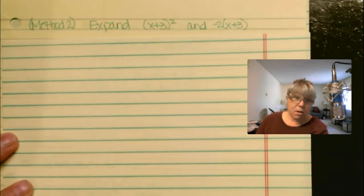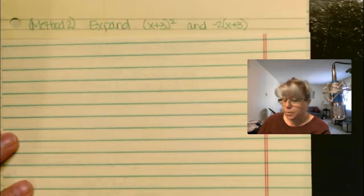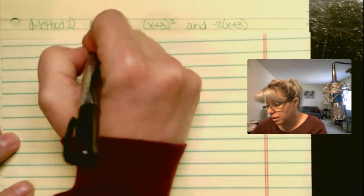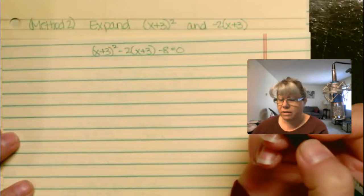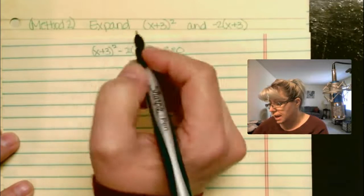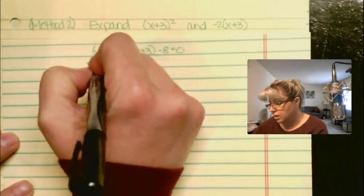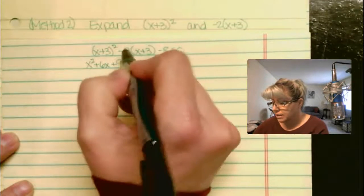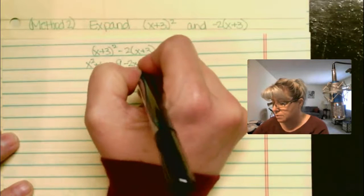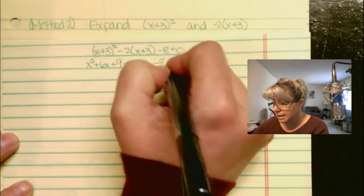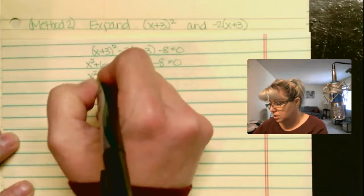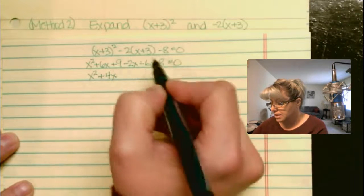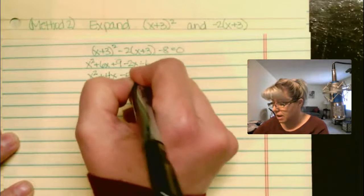That was one way of solving. The other is to go ahead and expand both x plus 3 squared and the negative 2 times x plus 3, and combine like terms. Our original equation x plus 3 quantity squared minus 2 times x plus 3 minus 8 equals 0. Expanding x plus 3 squared gives x squared plus 6x plus 9. Distributing the negative 2 gives negative 2x minus 6, minus 8 equals 0. Simplifying: x squared, 6x minus 2x is 4x, and 9 minus 6 minus 8 is minus 5 equals 0.